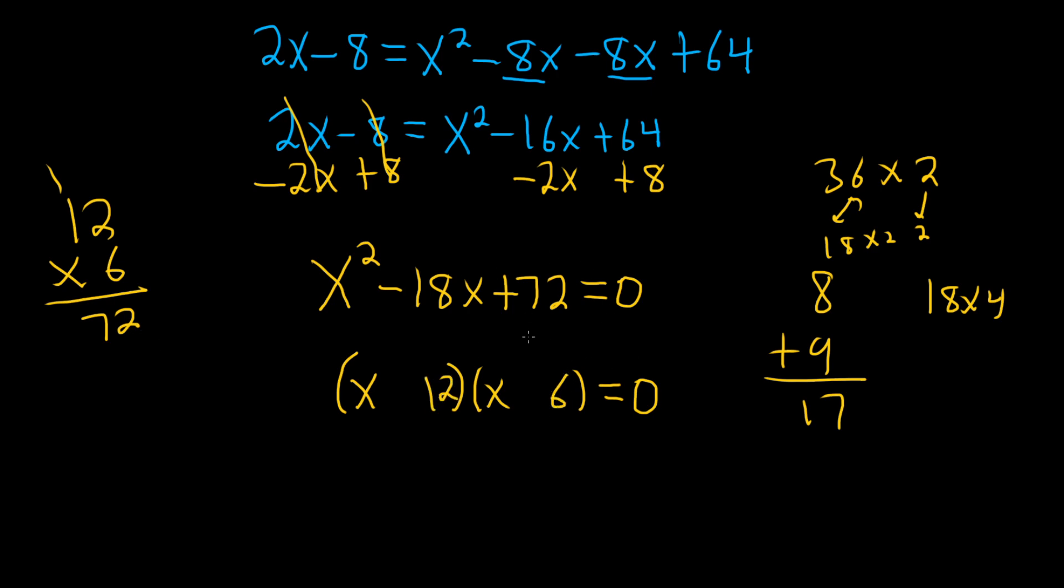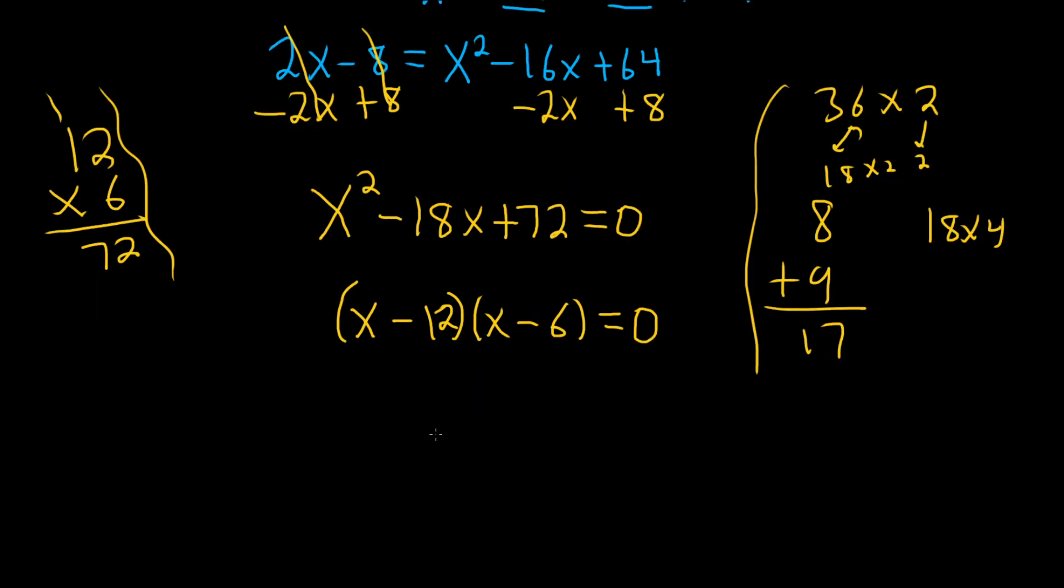So 12 times 6. So sometimes it's obvious. Maybe you're watching this video and thought, 12 times 6, what's going on with this guy? Sometimes it takes you a little bit more time for certain things. That's okay. That's normal. That's just part of math. So 12 times 6 is 72. And they're both going to be negative because they add to negative 18.